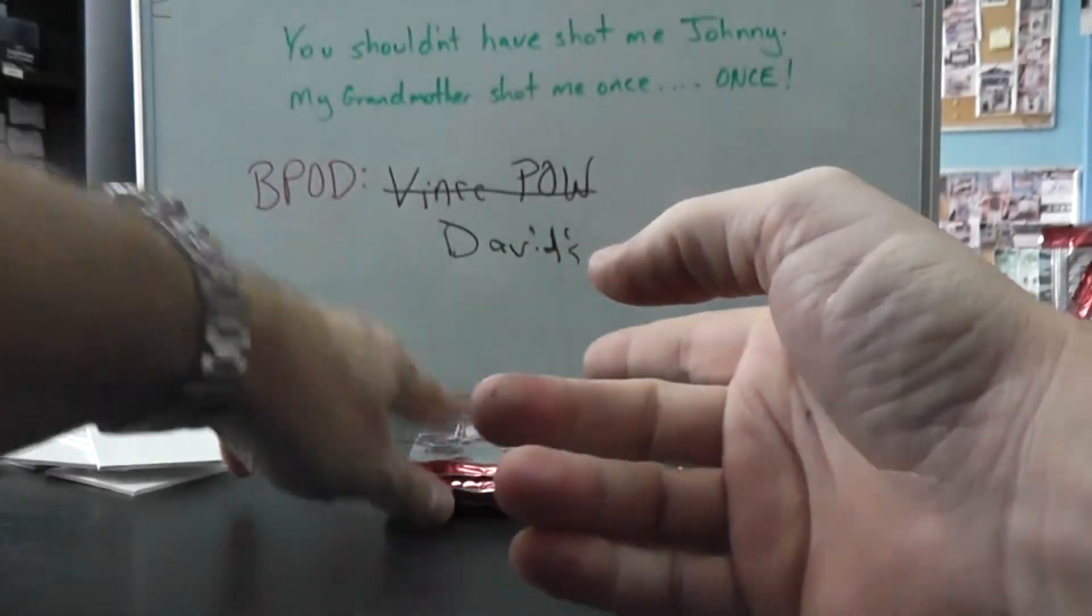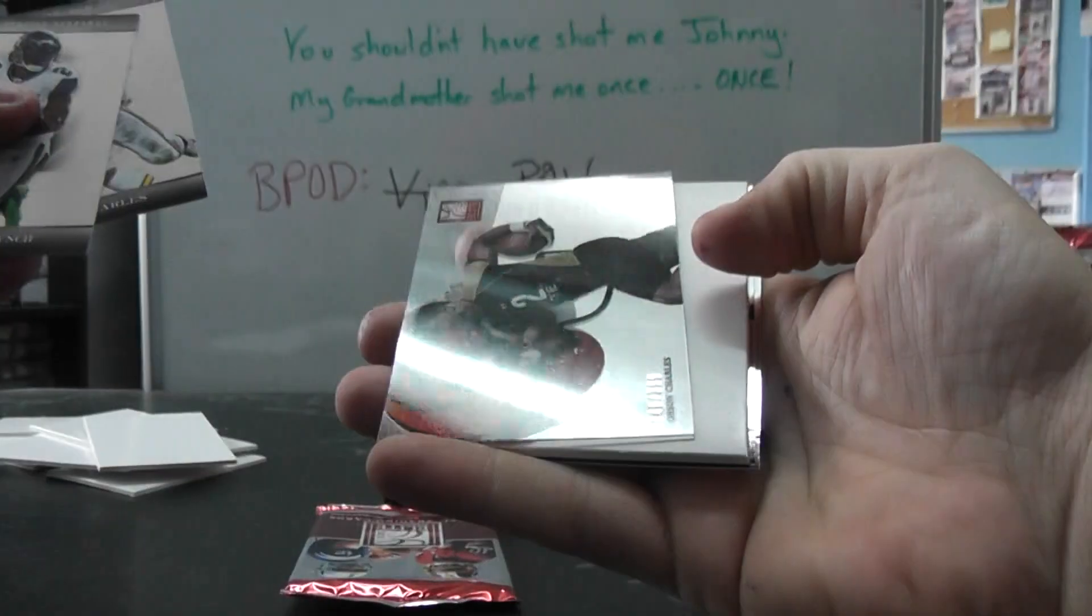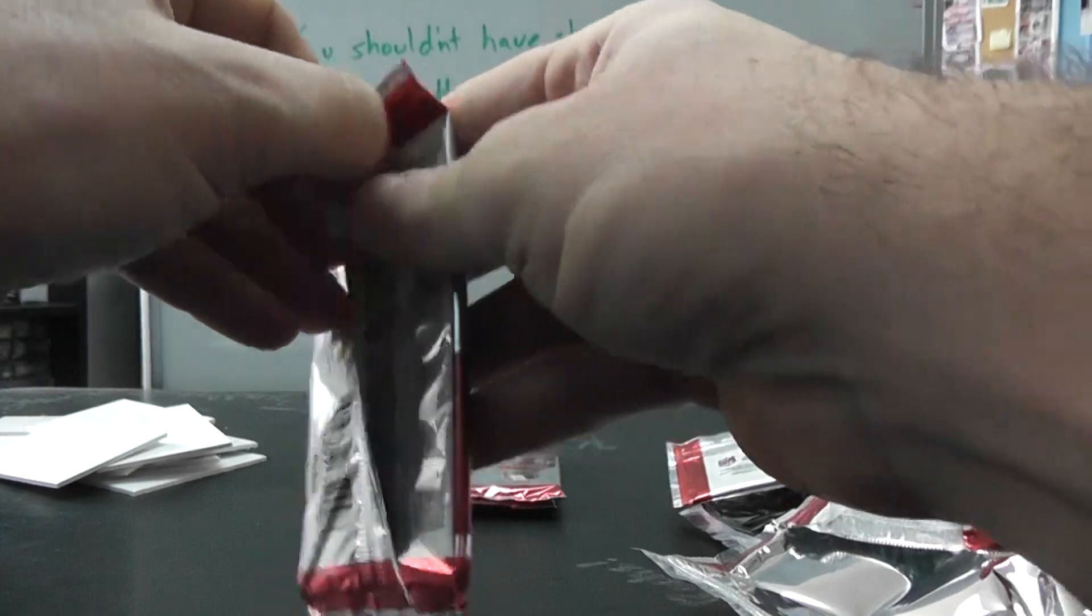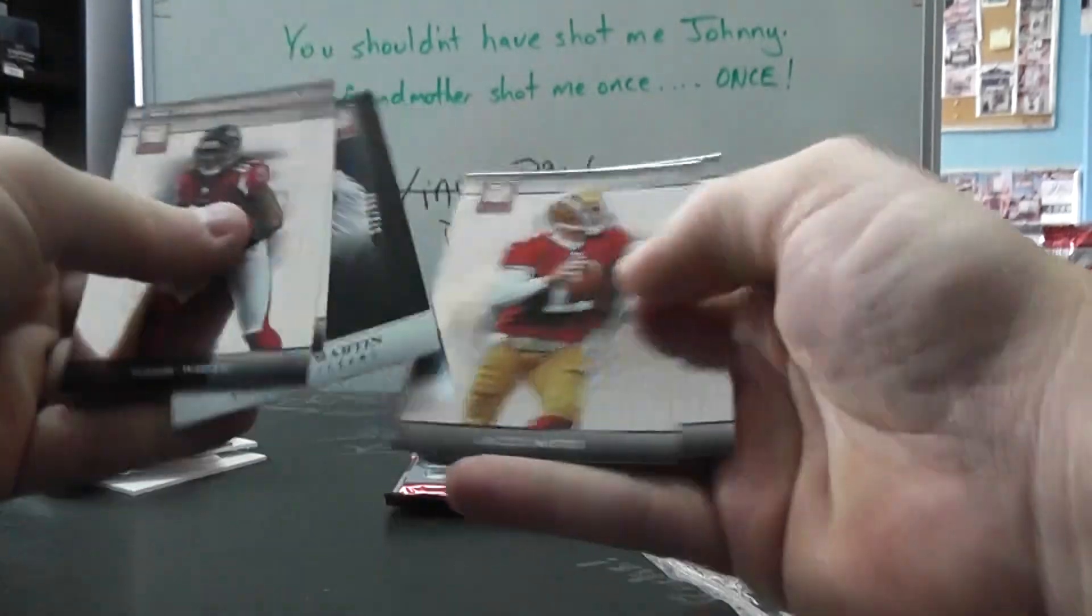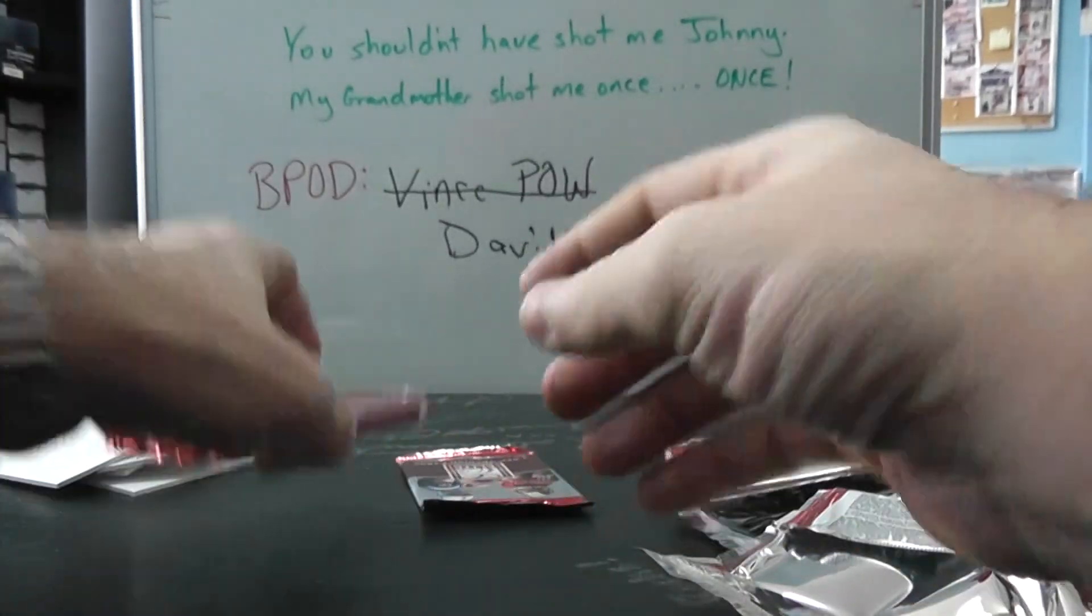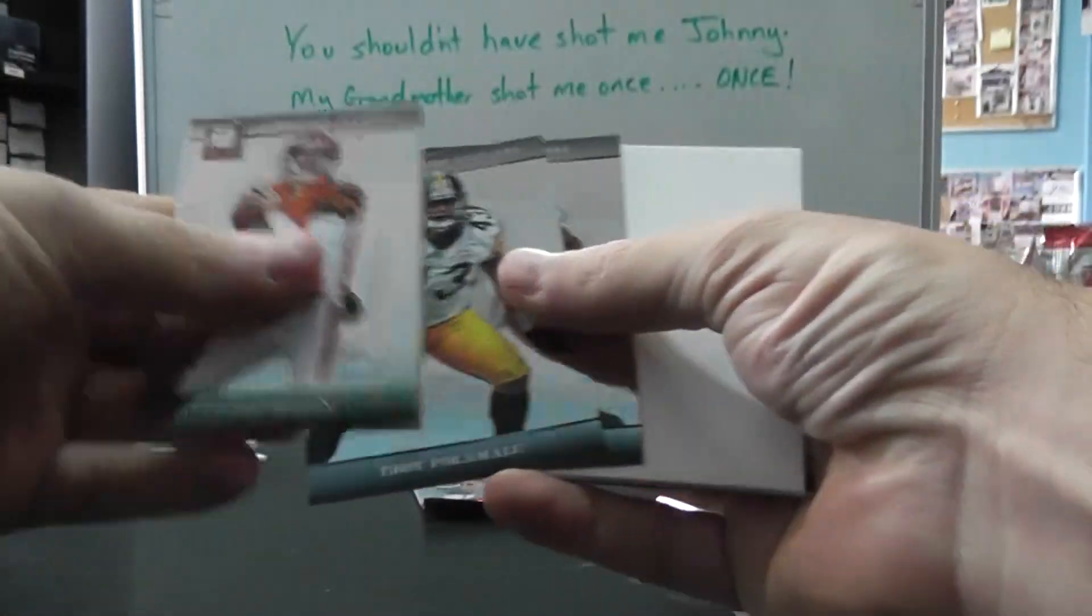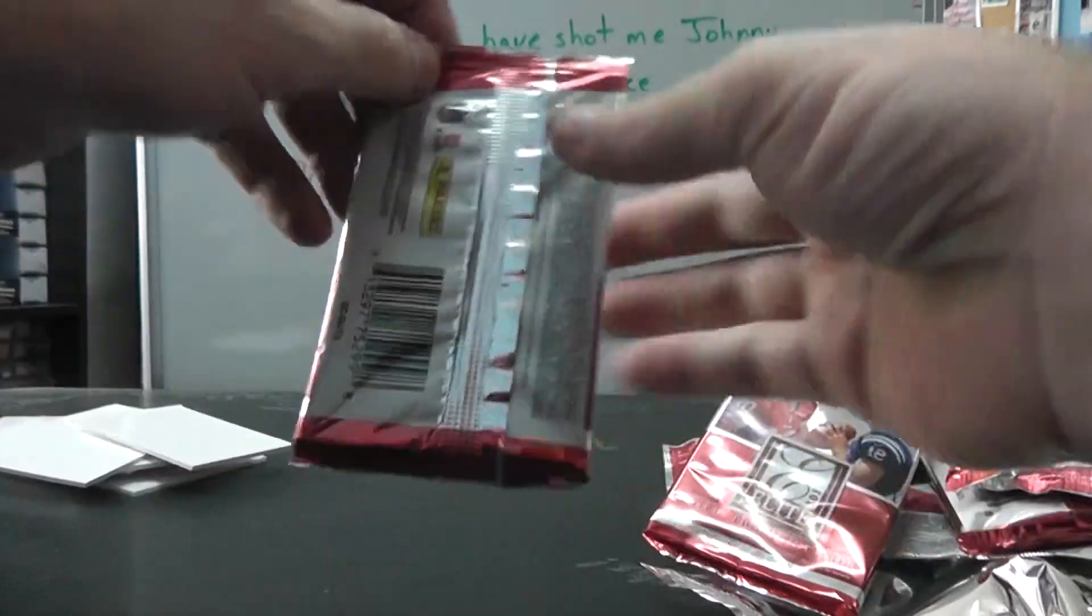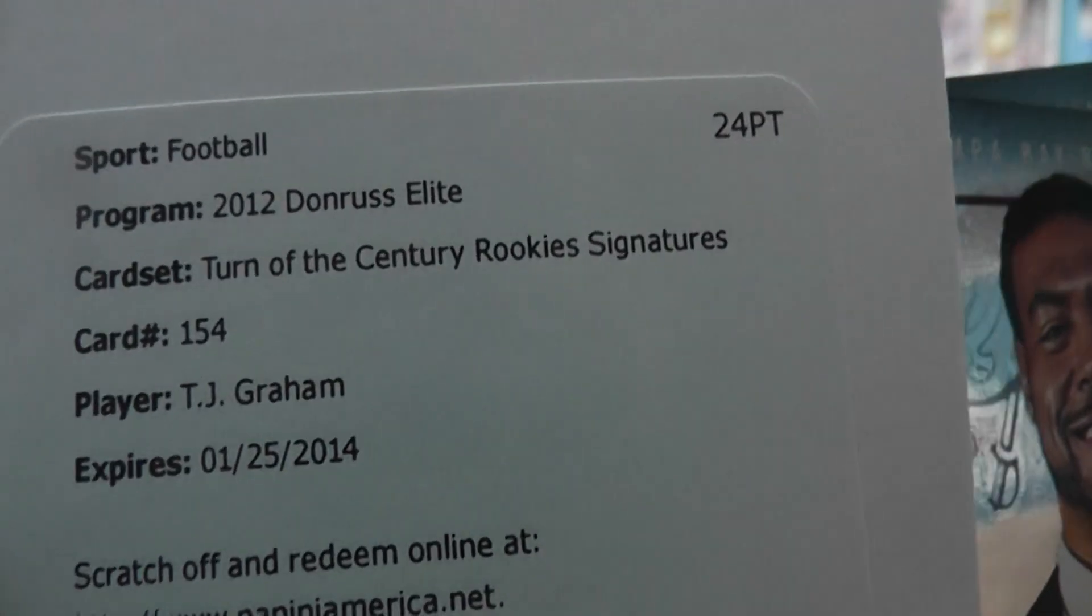Wait a second, that's only hit three. There should be one more. Acetate, Orson Charles. Cushon Martin. Base it is. And the last pack. I think there should be a hit in here. Yep. And it is TJ Graham, turn of the century rookie signatures. Bam, base.